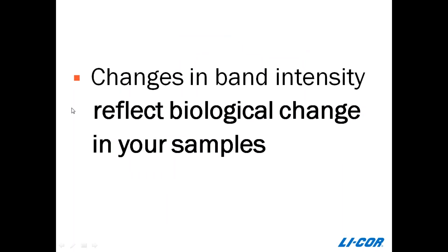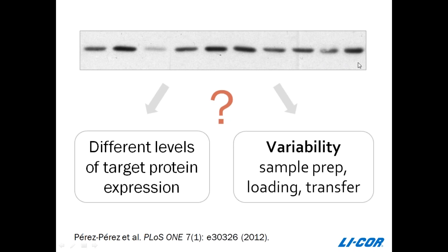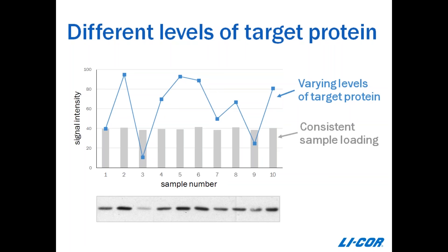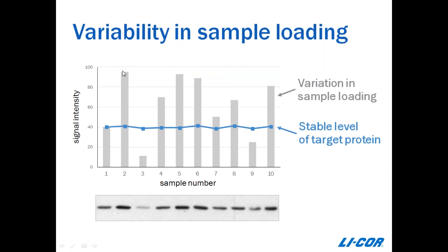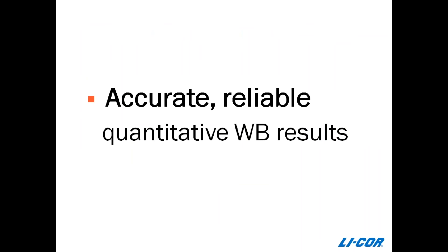These terms get tossed around an awful lot, so I want to start by establishing some definitions. Western blot normalization mathematically corrects for small and unavoidable sample-to-sample and lane-to-lane variability, and it does that by comparing the protein of interest to an internal loading control. That internal loading control is your indicator or readout of sample concentration and cell number, and it's the thing that enables relative comparison of protein levels across your blot. It's important because you need to be confident that the changes you see in band intensity reflect actual change in the biology and biochemistry of your protein samples.